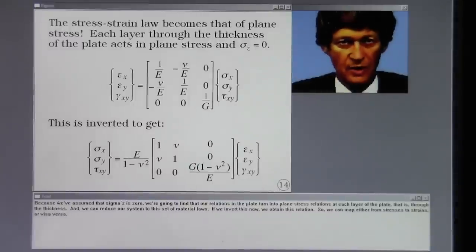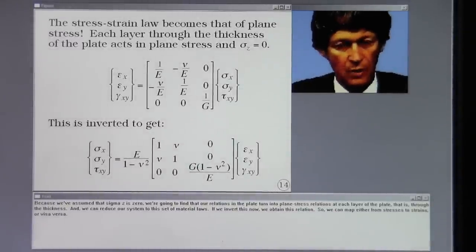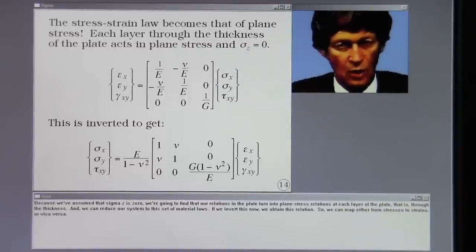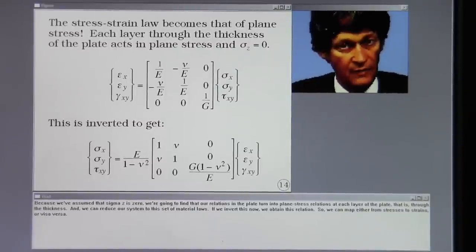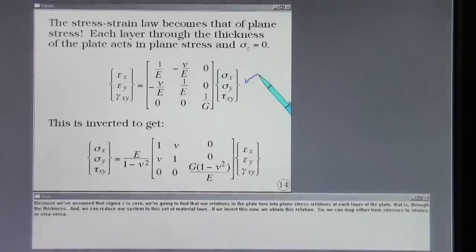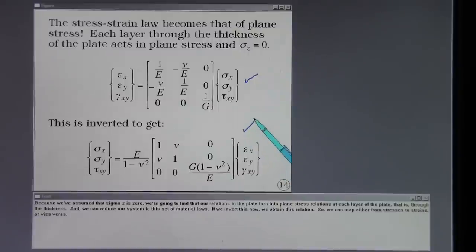Because we assume that sigma Z is zero, we're going to find that our relations in the plate turn into plane stress relations at each layer of the plate. That is through the thickness. And we can reduce our system to this set of material laws. If we invert this now we obtain this relation. So we can map either from stresses to strains or vice versa.